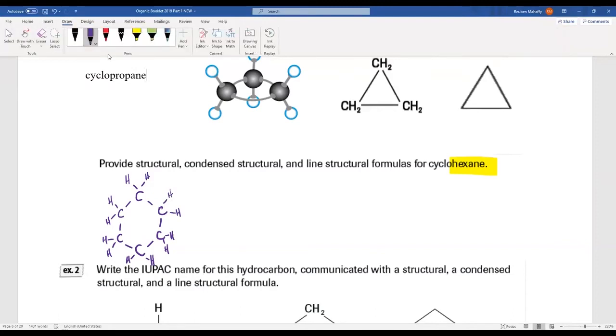For the condensed structural, my carbons would go in a ring again, but each carbon has got two hydrogens, so I'll be putting them as little CH2 units. If I'm doing a line diagram, this is nice and easy - I am just drawing a hexagon. So that would be the line diagram for cyclohexane.